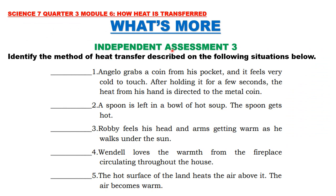Independent Assessment 3. Identify the method of heat transfer described in the following situations. Your choices are conduction, convection, and radiation. Number 1: Angelo grabs a coin from his pocket and it feels very cold to touch. After holding it for a few seconds, the heat from his hand is directed to the metal coin. 2: A spoon is left in a bowl of hot soup and the spoon gets hot. 3: Robby feels his head and arms getting warm as he walks under the sun. 4: Wendell loves the warmth from the fireplace circulating throughout the house. And 5: The hot surface of the land heats the air above it and the air becomes warm.